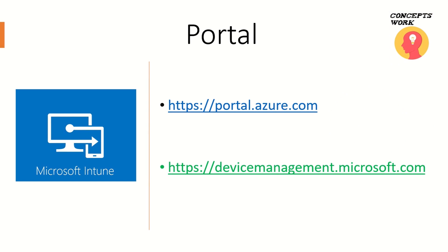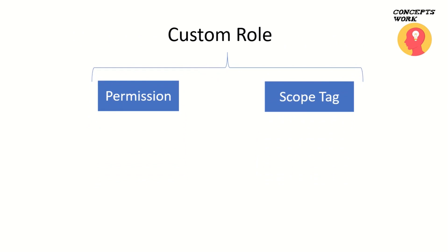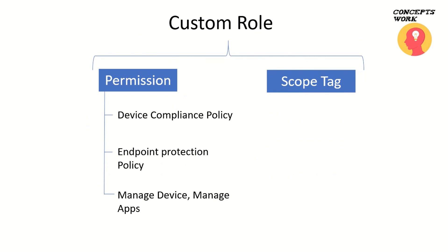The portals that can be used to customize Intune settings are portal.azure.com and devicemanagement.microsoft.com, but we will be using devicemanagement.microsoft.com to make all the changes. Custom roles in Intune have two components: the first one is permission and the other one is scope tag. Permissions are not something new — we've been working with them from AD to Azure AD and now in Intune. In a nutshell, permission means the privilege given to a user to make changes for other users or devices. The question is how we scope that privilege to a limited set of users or devices — that is the entry point for understanding what a scope tag is.